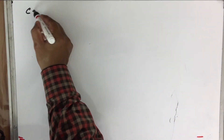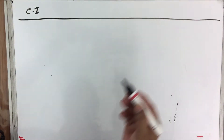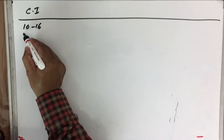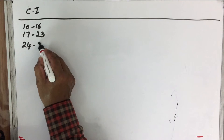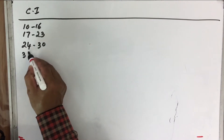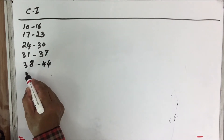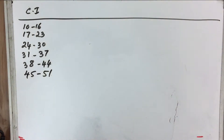Let us take up a problem and try to understand how to solve it. Here is a continuous distribution. The class intervals are: 10 to 16, 17 to 23, 24 to 30, 31 to 37, 38 to 44, and 45 to 51. Assume these are the classes that we have.